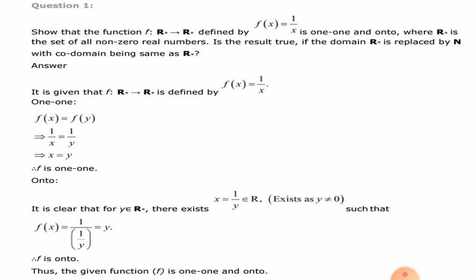For onto: suppose y belongs to R* (the co-domain). There exists x = 1/y belonging to R* where y ≠ 0, such that f(x) = f(1/y) = 1/(1/y) = y. Therefore f is an onto function. So the given function is one-one and onto, meaning the result is true.